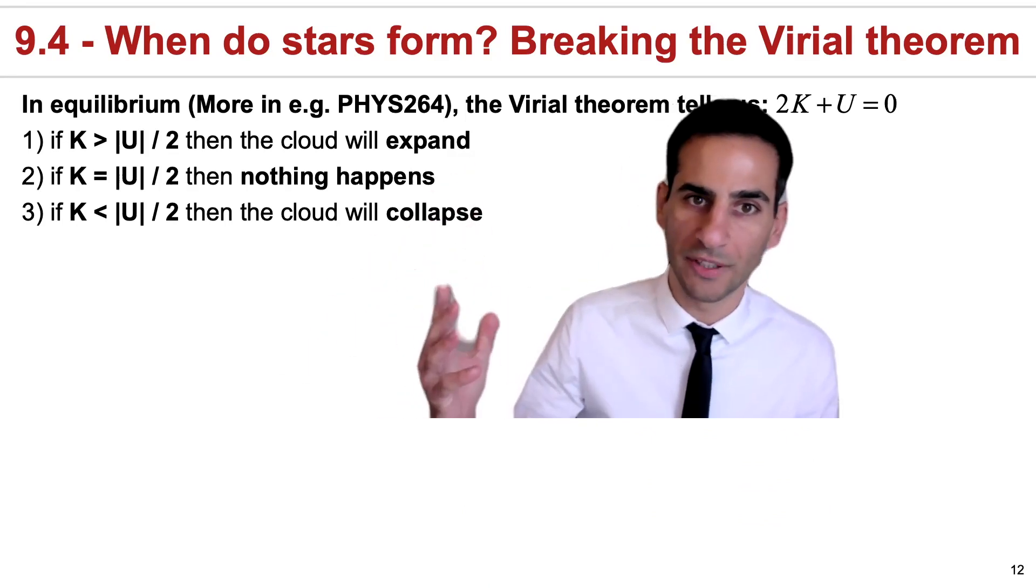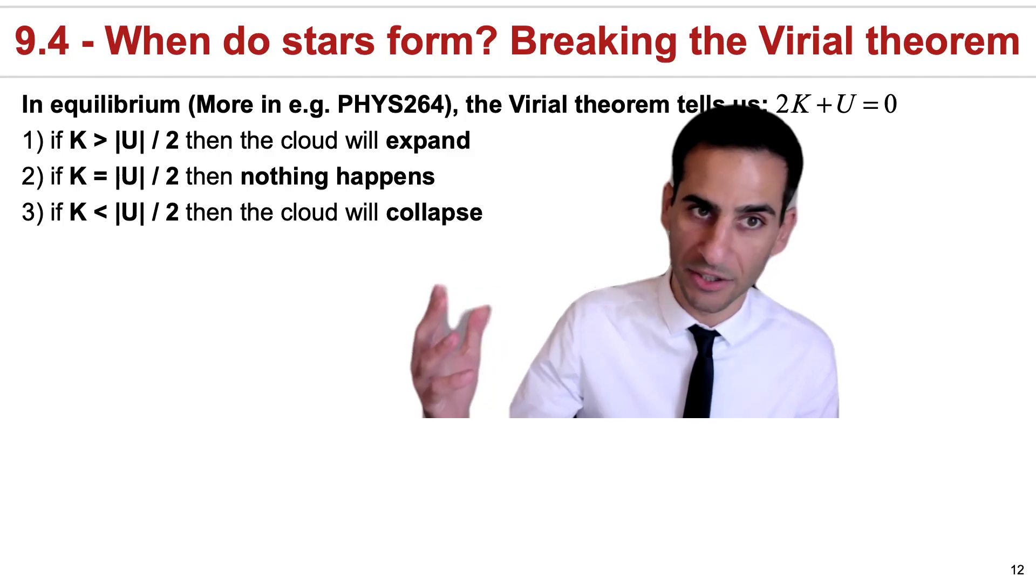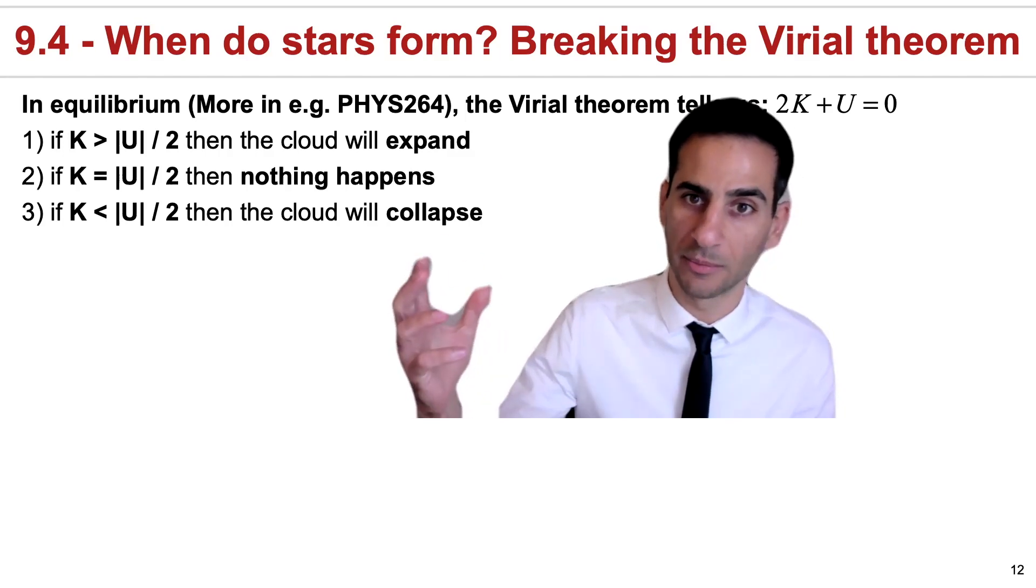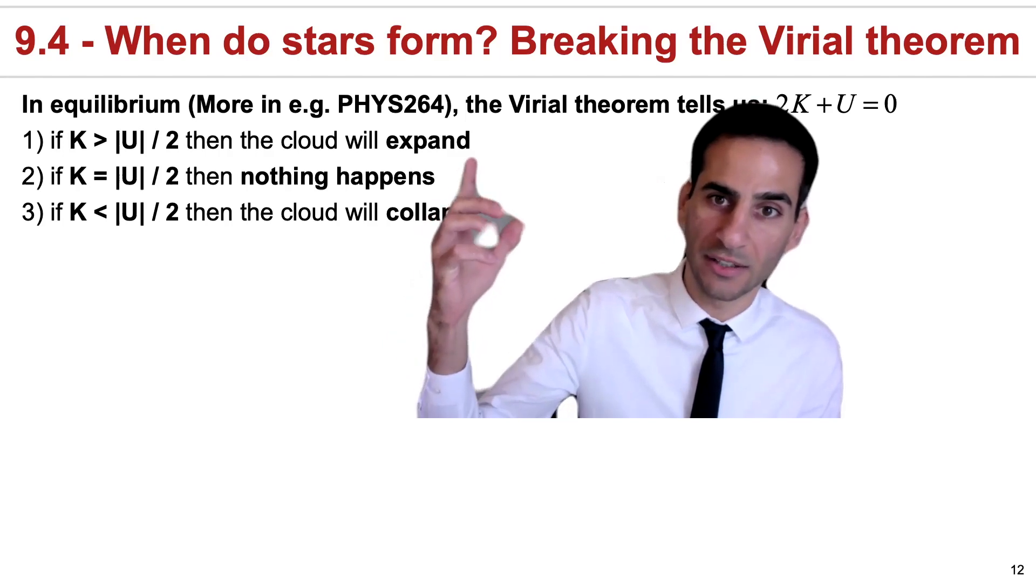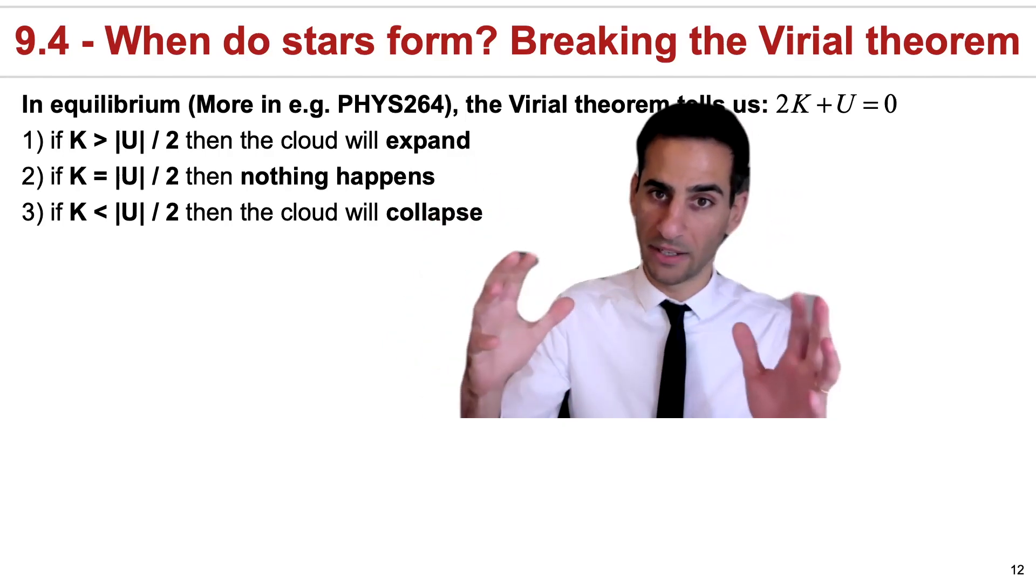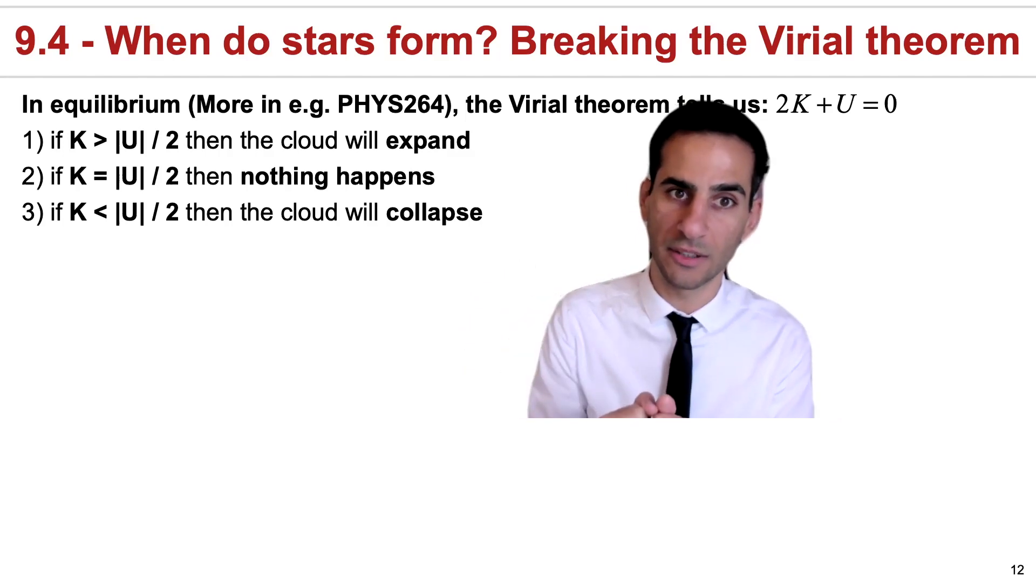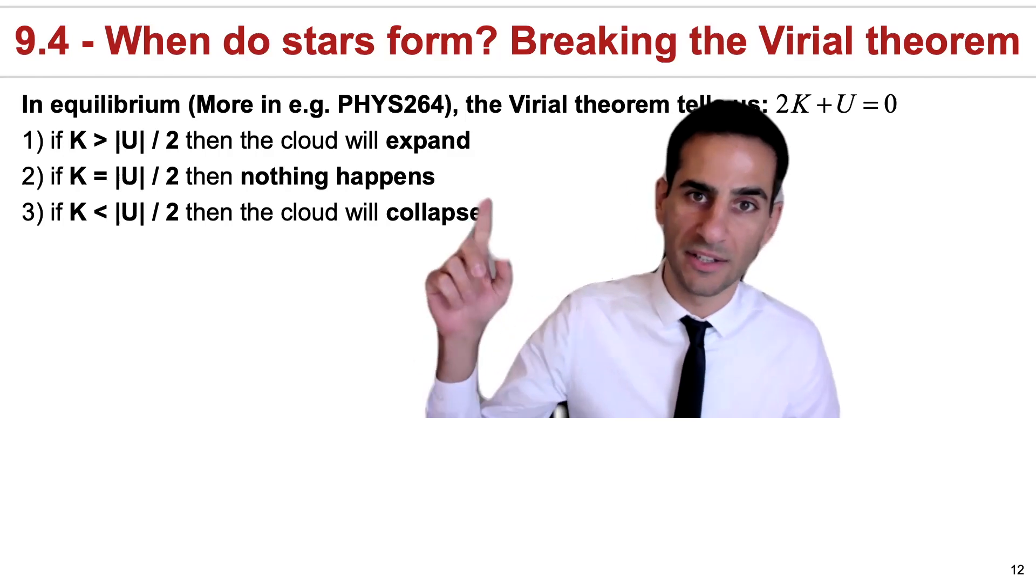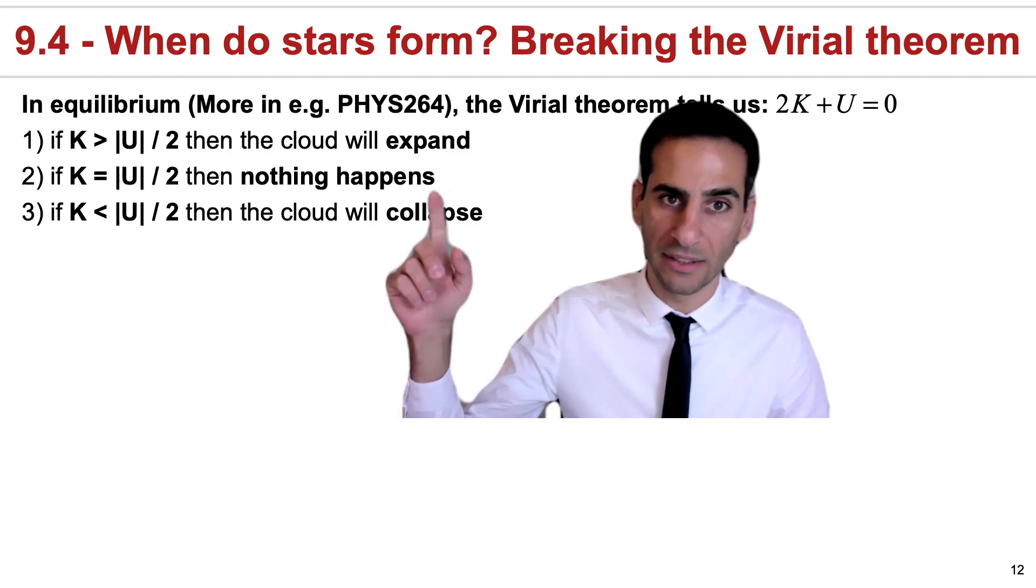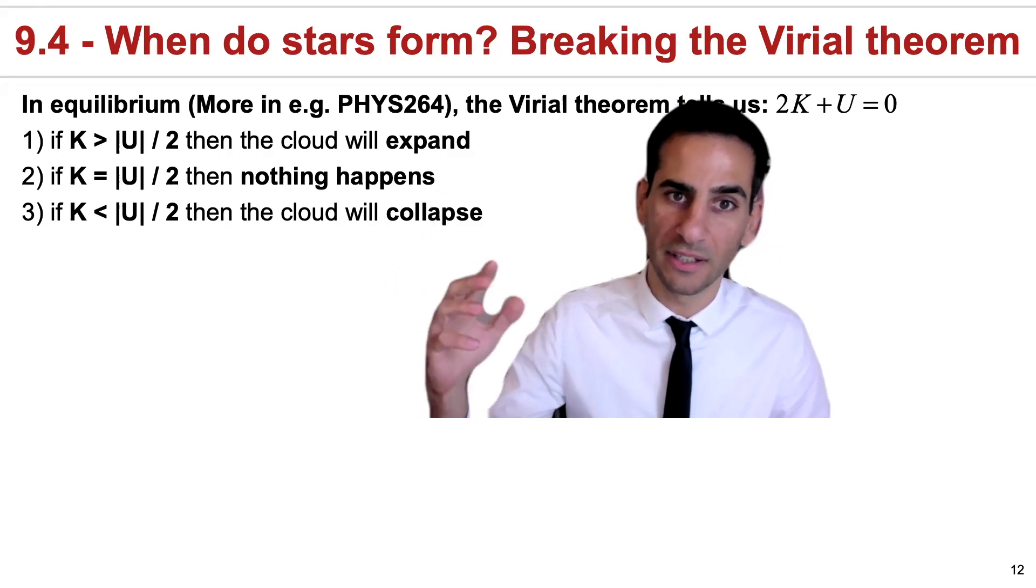For example, if the cloud actually has more kinetic energy than the gravitational potential energy divided by two, then the cloud will start expanding because it has more kinetic energy than gravitational potential energy. If it is satisfying the Virial theorem exactly, then nothing happens. This means that the cloud is stable.